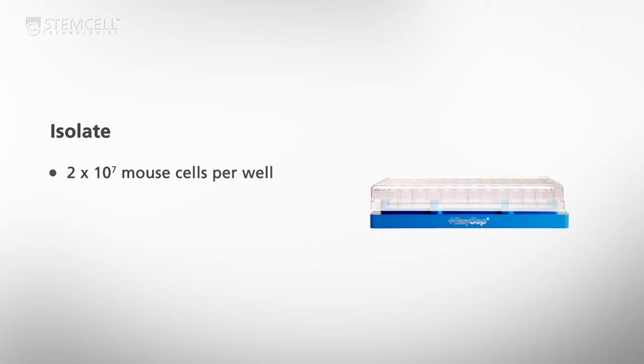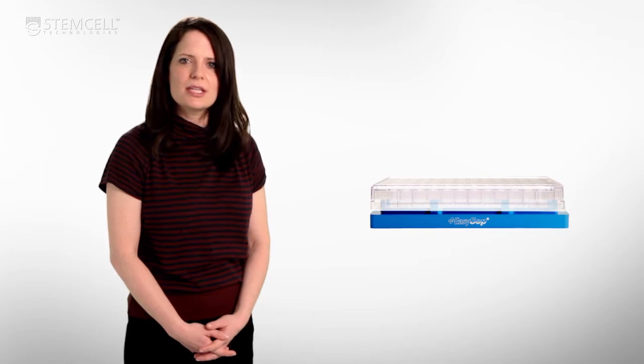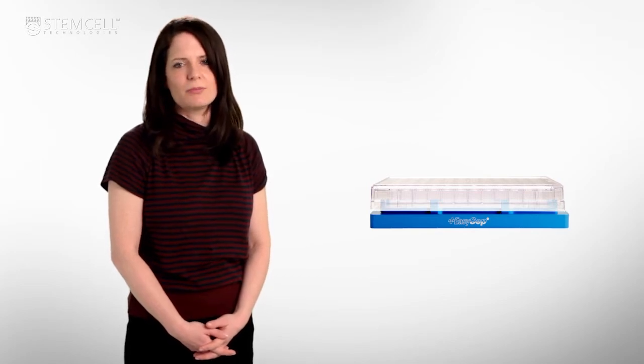EasyPlate can isolate from samples of up to 2x10^7 mouse cells or 1x10^7 human cells per well in as little as 25 minutes. This video will demonstrate how to use the EasyPlate to isolate untouched human B cells.